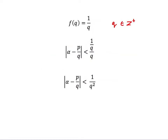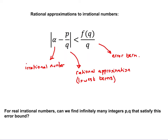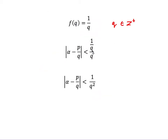To work through an example: if I take f(q) = 1/q, then using f(q)/q as the error bound gives me 1/q², so the condition becomes |α − p/q| < 1/q². That is my error bound, taking q to be a positive integer.